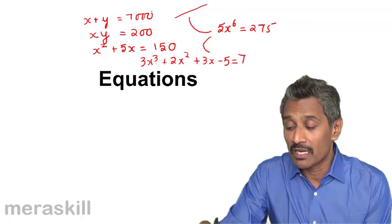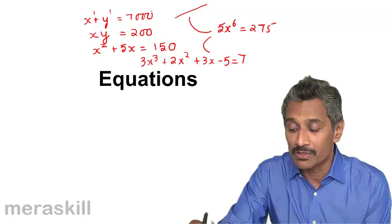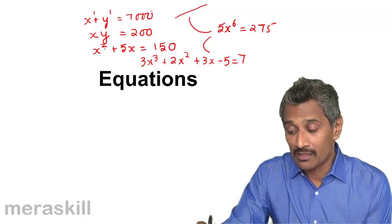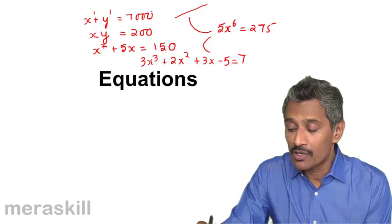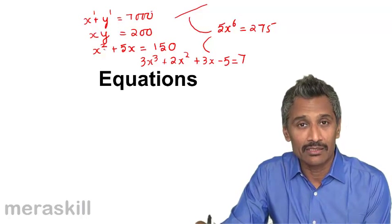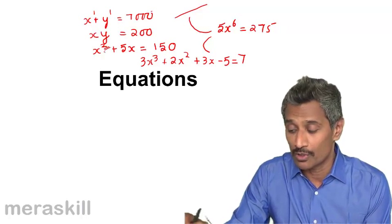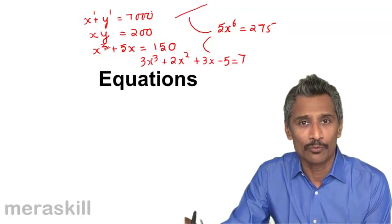For this one, there will be one pair of solutions for x plus y because each of these has been raised to the power 1. This one, since the maximum power of the unknown, that is a variable which we also call as a degree, the maximum power is called a degree, is 2. So this one will have two solutions and so on and so forth.